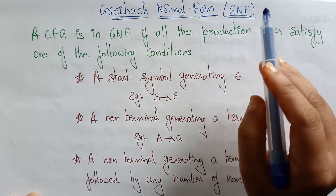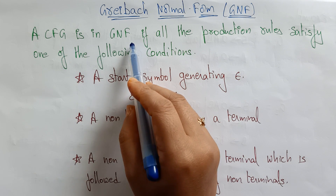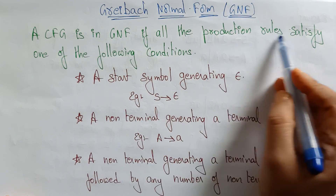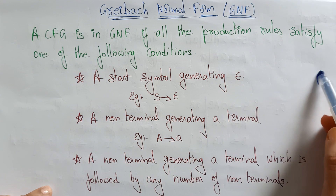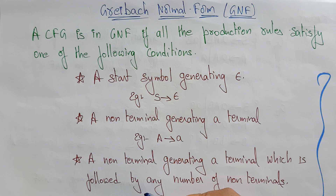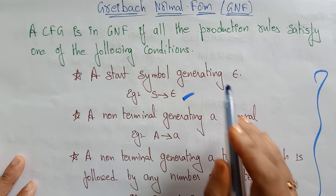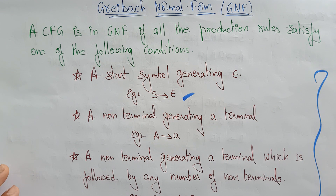GNF, that is Greibach Normal Form. A context-free grammar is in Greibach Normal Form if all the production rules satisfy one of the following conditions. The first condition is: a start symbol generating epsilon. So if the start symbol generates epsilon, that particular production is in GNF.